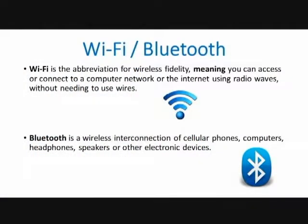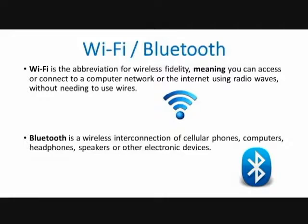The next thing we want to talk about is Wi-Fi and Bluetooth. Wi-Fi is an abbreviation for the term wireless fidelity, meaning you can access or connect your computer or network to the internet via radio waves — you don't have to have wires. Bluetooth is for connecting your devices together, like connecting your phone and speakers without a wire, or even printers connecting via Bluetooth. So Wi-Fi lets you connect to other computers and the internet, and Bluetooth lets devices connect to each other — that's the difference between those two.